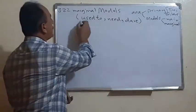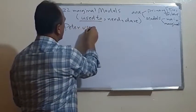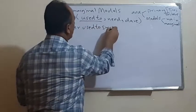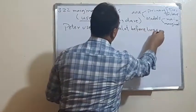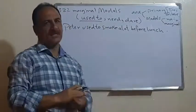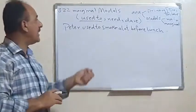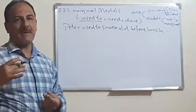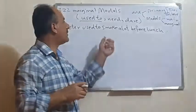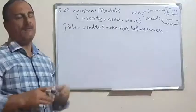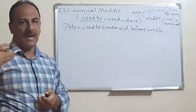Let's talk about the first one, 'used to', with this example: 'Peter used to smoke a lot before lunch.' Concerning the meaning, 'used to' is used in most cases to describe an action which was a bad habit or behavior performed in the past but is no longer done today.